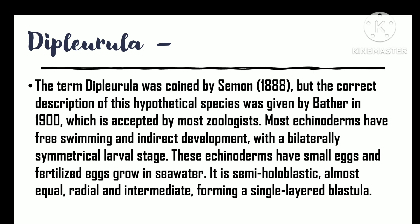Majority of echinoderms have indirect development with free-swimming and bilaterally symmetrical larval stages. These echinoderms have small eggs and the fertilized egg develops in seawater. The cleavage is holoblastic, nearly equal, radial and indeterminate to form a hollow one-layered ciliated blastula.